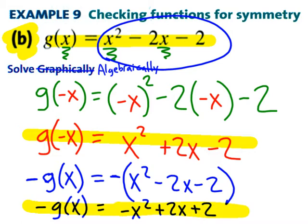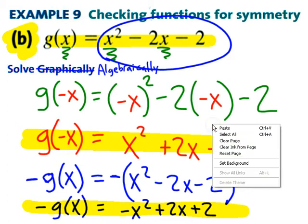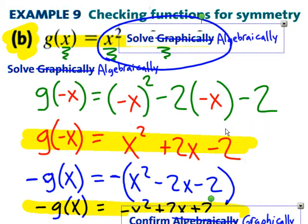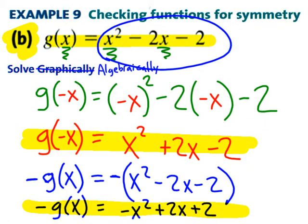Now, compare negative G of X with G of negative X, and are they the same thing? Well, no, they're not. So, we see that from our algebraic definition, this is neither even nor odd.